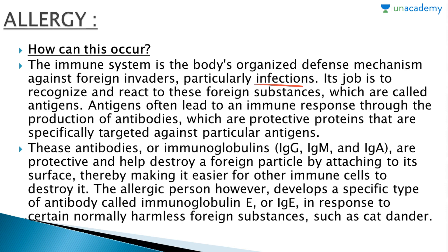The immune system is the body's organized defense mechanism against foreign invaders, particularly infections. Its job is to recognize and react to these foreign substances, called antigens. Antigens often lead to an immune response through the production of antibodies — protective proteins specifically targeted against particular antigens. These antibodies, or immunoglobulins, include IgG, IgM, and IgA, and are protective.